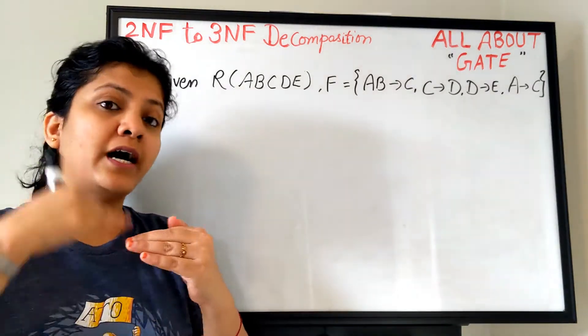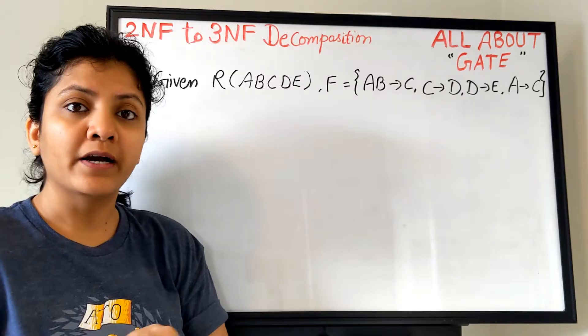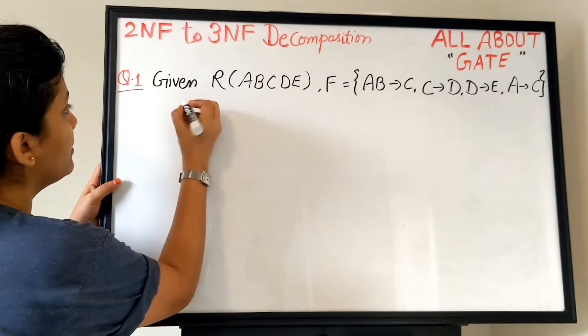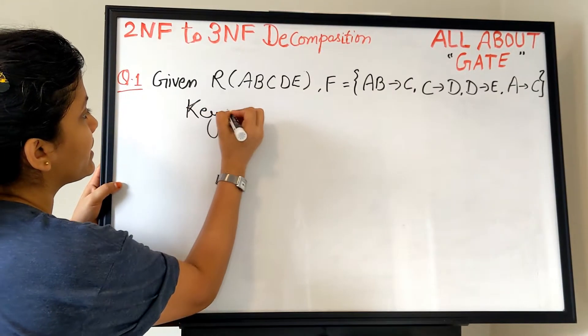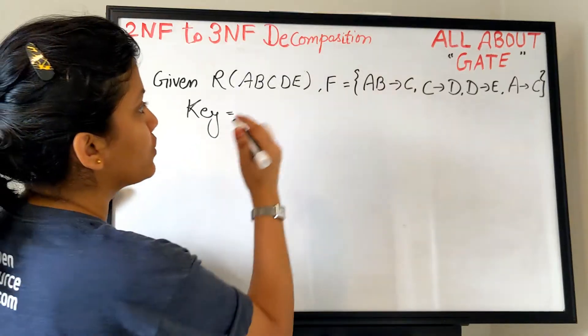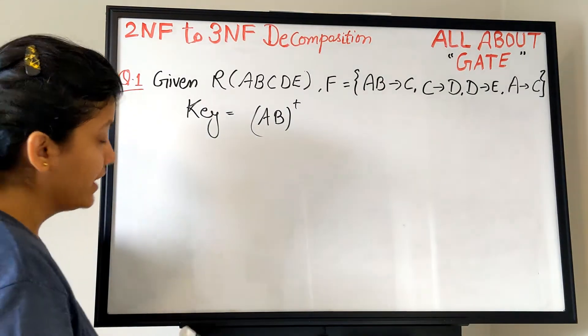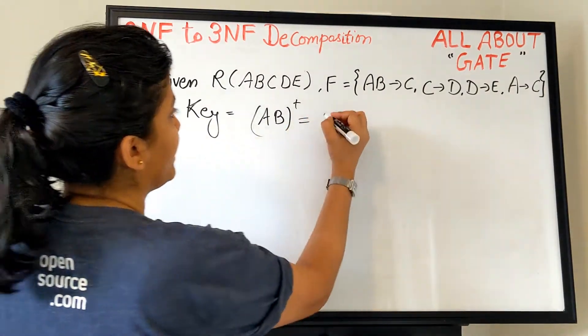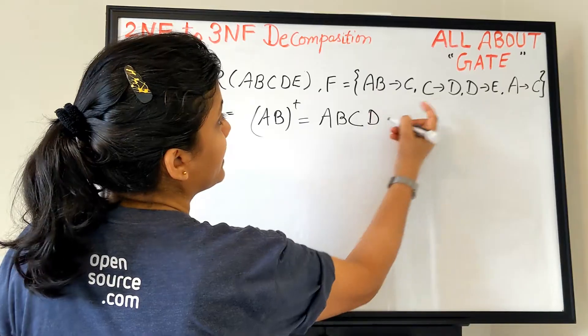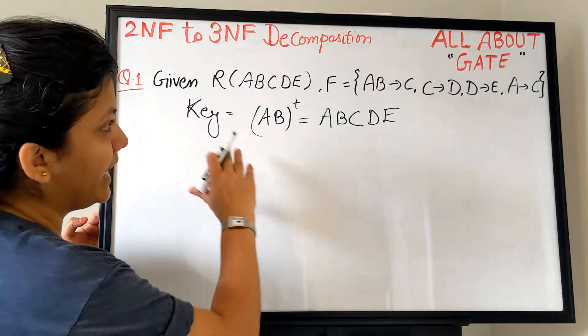As I'm trying to decompose in the higher normal form, first of all we need to know which normal form this relation is already in. I hope you all very well remember how to do that - first of all find out the key of the relation. For that matter, look at all the functional dependencies and try to derive. I take my AB at first as I always do, the very first functional dependency's determinant part. So AB+ is what? AB gives me C, C is gonna give me D, and D is gonna give me E.